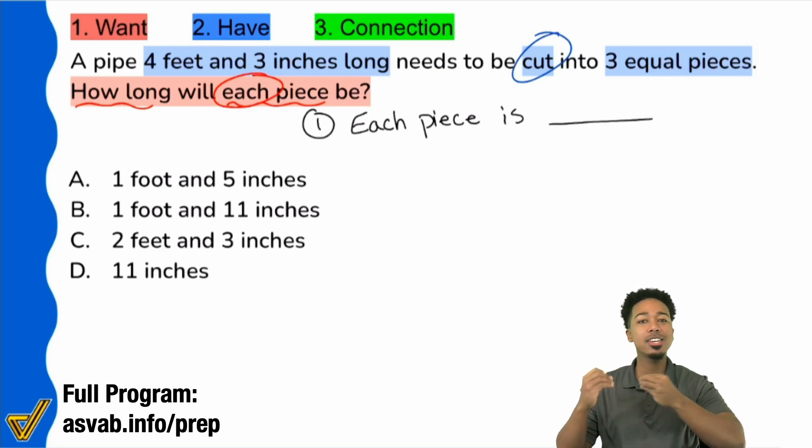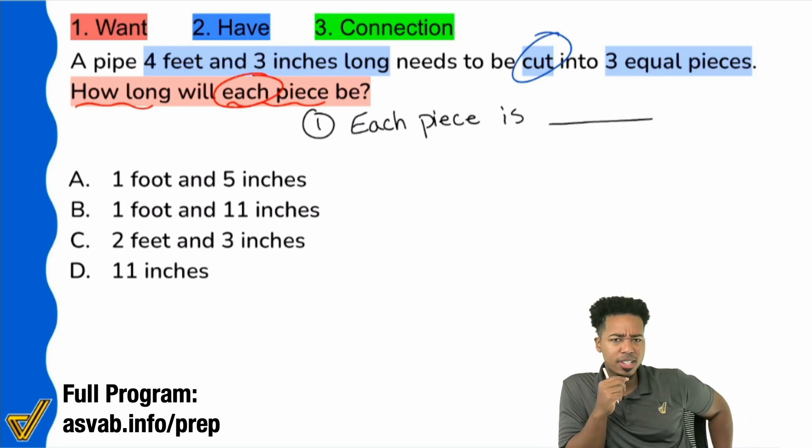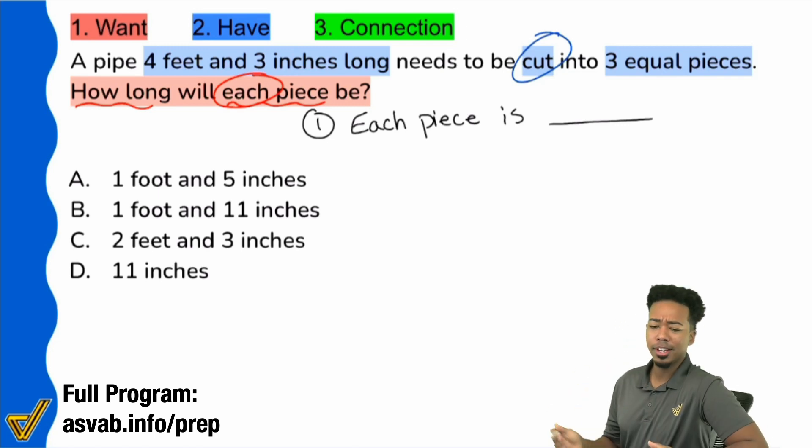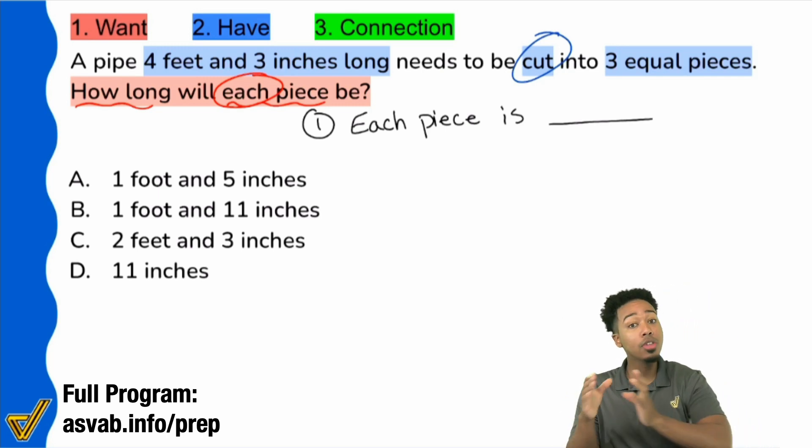If you're cutting something into equal pieces, mathematically, what are you really doing? Again, we have to understand how these keywords in English translate in the math. So that keyword cut into equal pieces, that's division. Think about it. If I have just $10, if I have $10 and I cut it into two equal pieces, that's $5 and $5. I divided it by two, right? Just because you're looking at a weird number, like four feet and three inches, doesn't mean that the process changes. The numbers change. The processes and keywords don't. Those keywords stay the same.